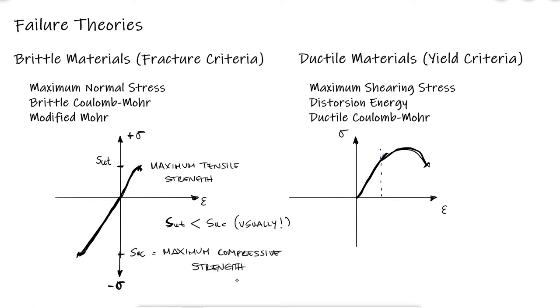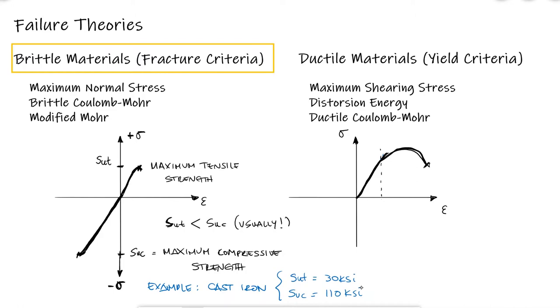For example, cast iron can have a maximum tensile strength of 30 ksi and a maximum compressive strength of 110 ksi. For all the fracture criteria — the maximum normal stress, Brittle Coulomb-Mohr, and modified Mohr — we'll use the information that we get from Mohr's circle, specifically the principal stresses.